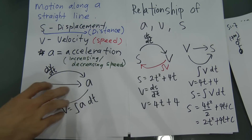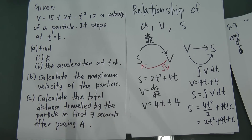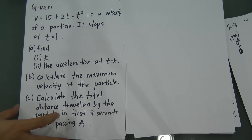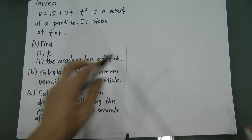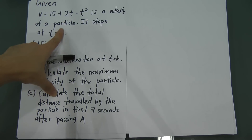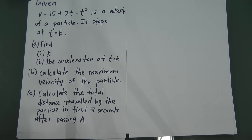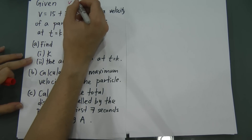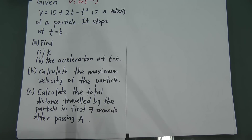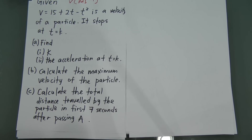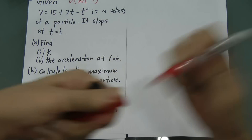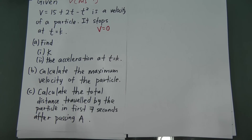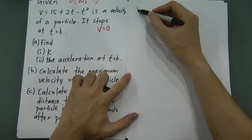Example question: given v = 15 + 2t − t², the velocity of a particle in ms⁻¹. The particle stops at t = k seconds. Part A: find k. When the particle stops, v = 0. So set 0 = 15 + 2t − t².